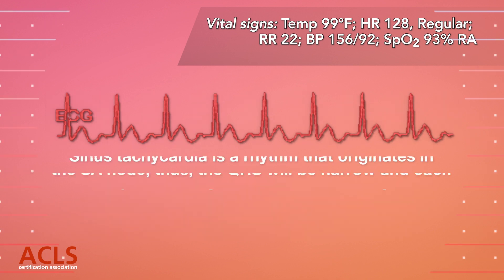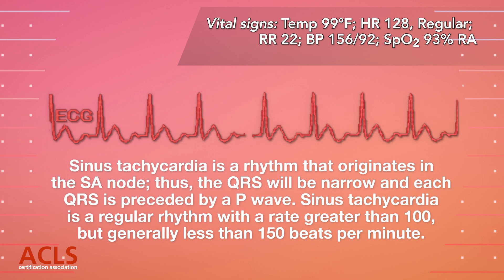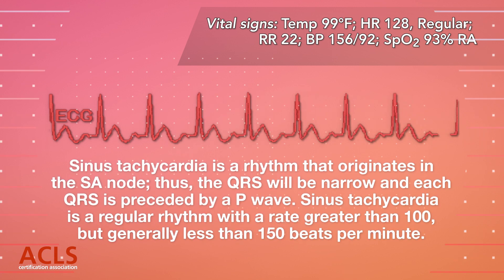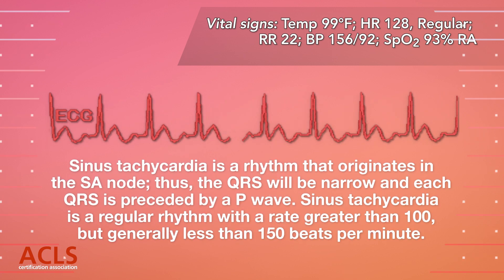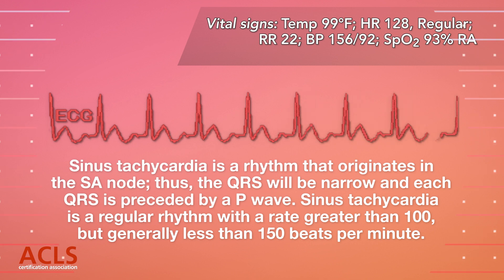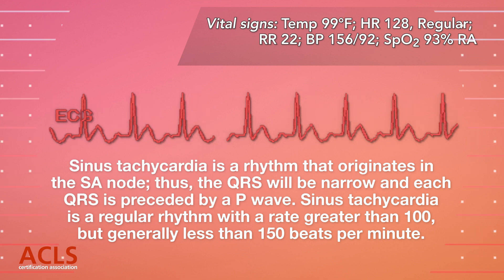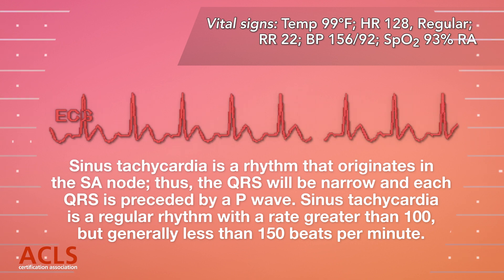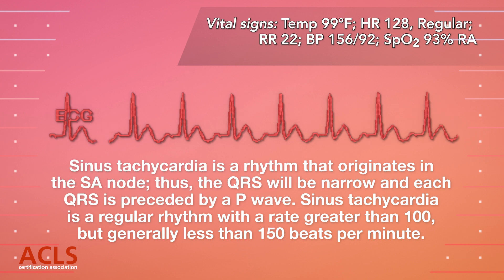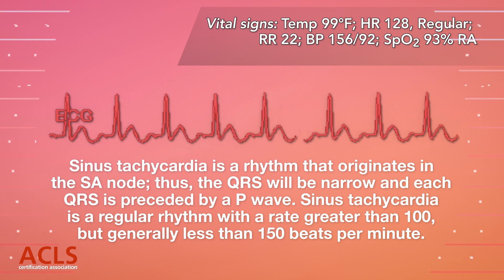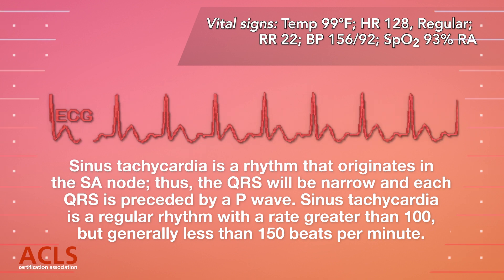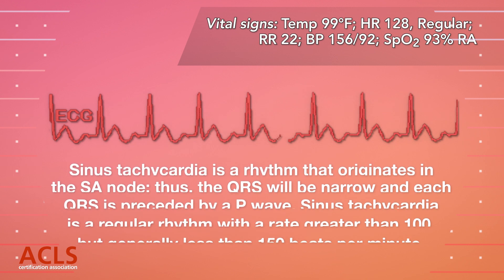Sinus tachycardia is a rhythm that originates in the SA node. Thus, the QRS will be narrow. Each QRS will be preceded by a P wave. The rhythm is regular and the rate will be greater than 100 but generally less than 150 beats per minute.